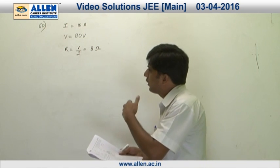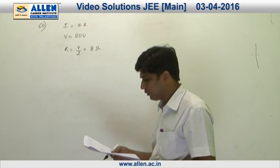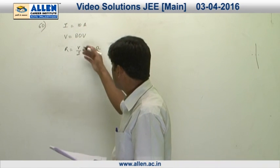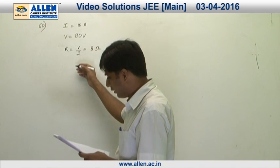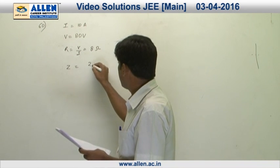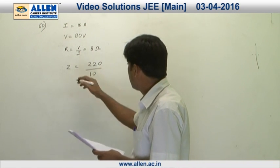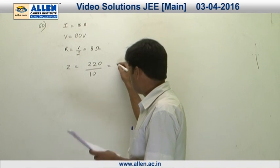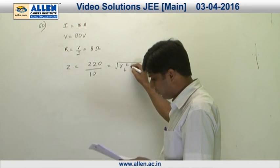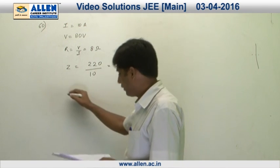In the second case, because the lamp is connected with the AC source, Z = V/I = 220 volts divided by the current. The value of current is 10, so Z = 22 Ohm. The value of Z, as we know, is √(XL² + 8²).